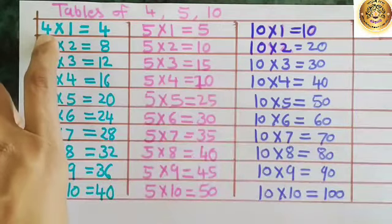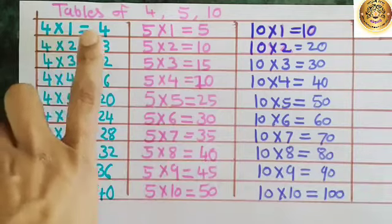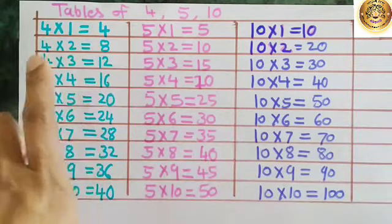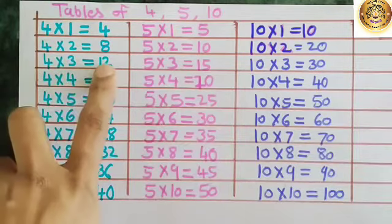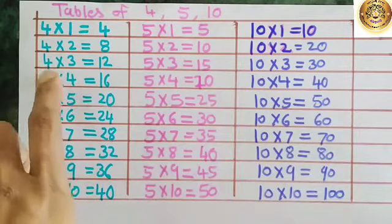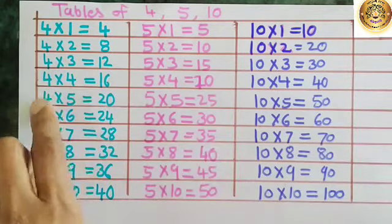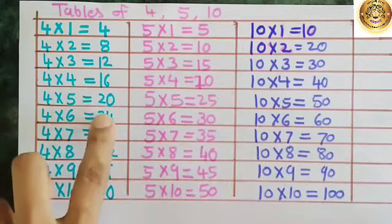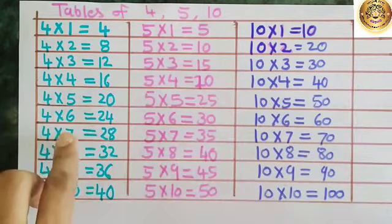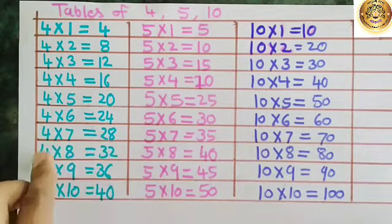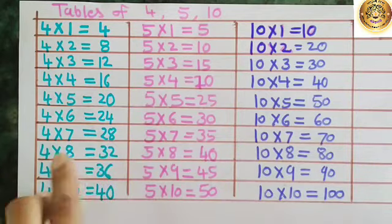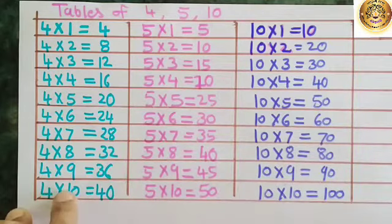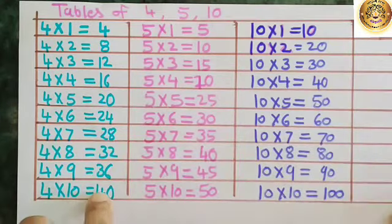Let's read: 4 1s are 4. 4 2s are 8. 4 3s are 12. 4 4s are 16. 4 5s are 20. 4 6s are 24. 4 7s are 28. 4 8s are 32. 4 9s are 36. 4 10s are 40.